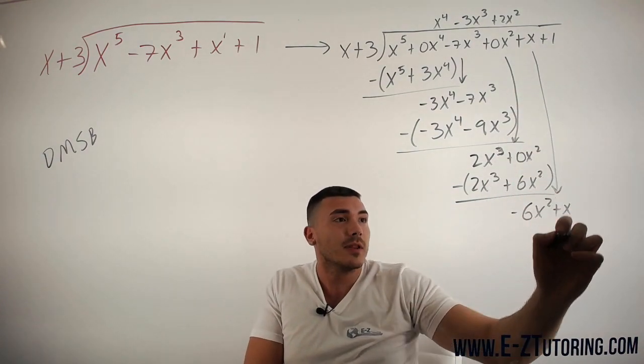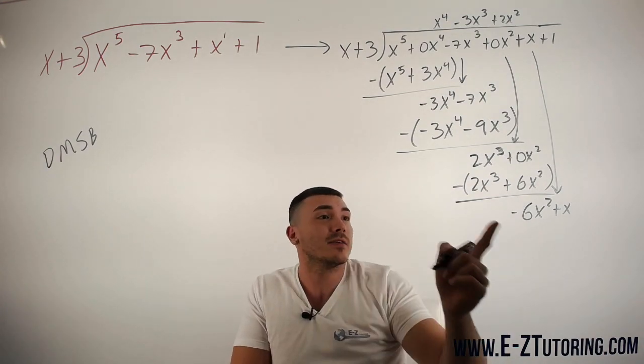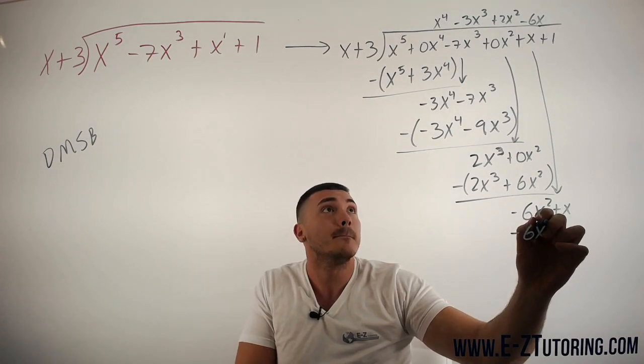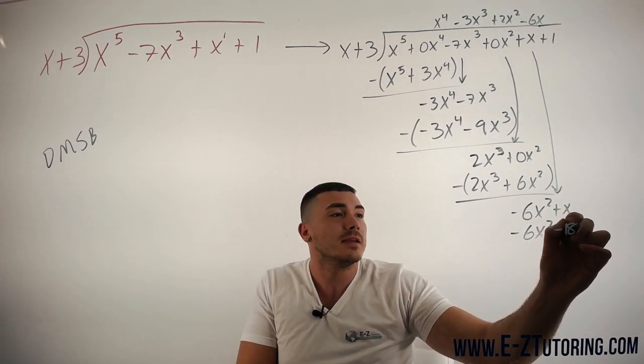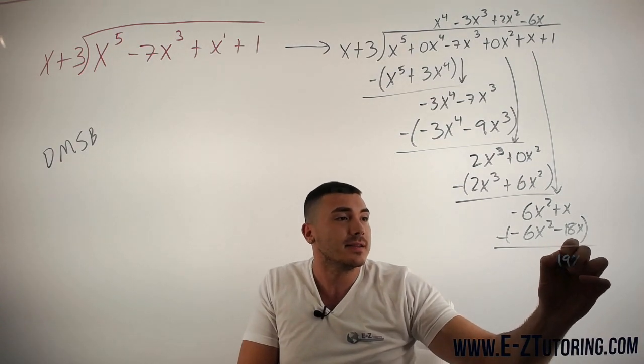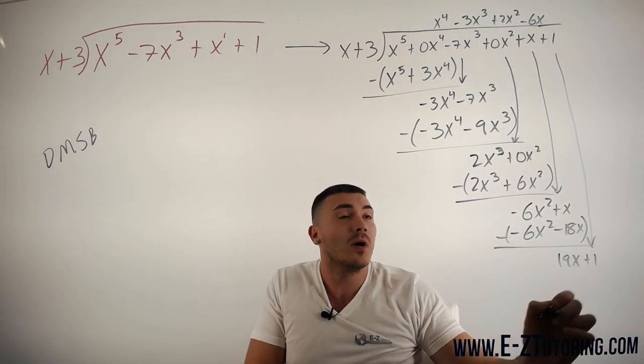Bring down plus x. Start all over. x goes in here negative 6x times. Multiply all that. Minus 18x. Subtract all this. We get 19x. Bring down the 1.